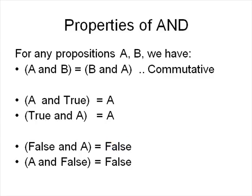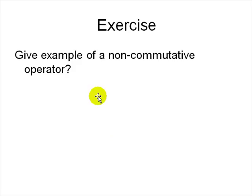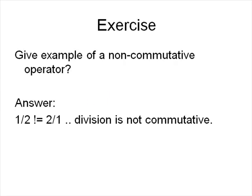So now the question is. Can you give example of a non-commutative operator? Well think about it. Non-commutative means a operator b is not same as b operator a. So for example we have the answer. One divided by two is not the same as two divided by one. So division is not commutative.